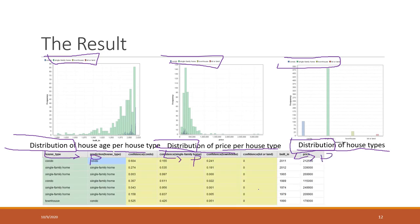Then we have the results. For the first record, the probability of being a condo is highest, so the predicted result is condo. For the second record, being a single family home has the highest probability, so it is predicted as a single family home. We convert the distributions into probabilities to get these predictions.